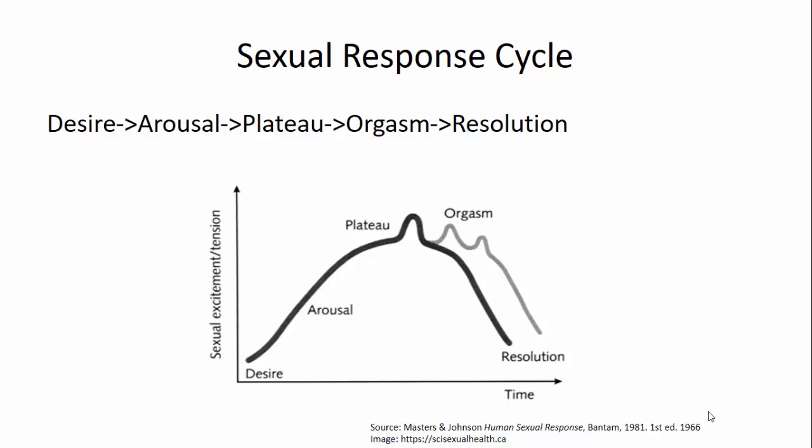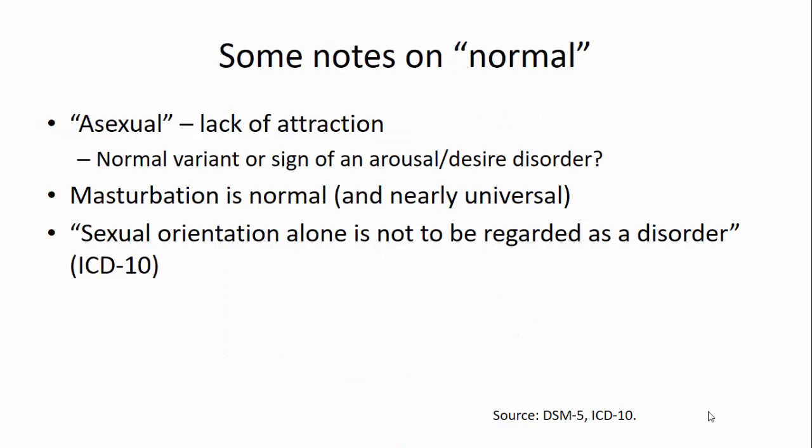Just some notes on normal behavior. Asexual behavior, for example, is a lack of attraction, and some people identify as asexual and are in no distress about it. We'll talk about a disorder in which people have no attraction and experience distress as a result — that's an important distinction. Masturbation is normal, and sexual orientation alone, as defined in the ICD-10, is not to be regarded as a disorder.